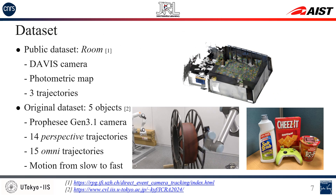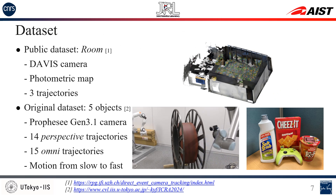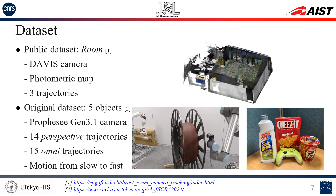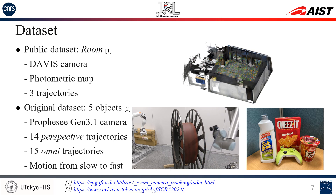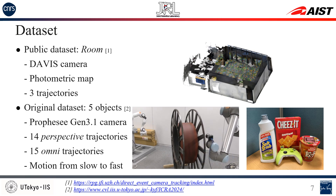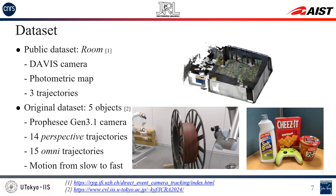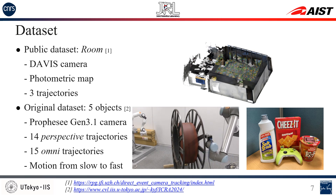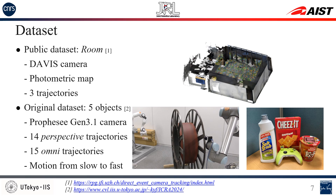We evaluate our method on two datasets. First is the room dataset, with three trajectories of a moving camera inside a room. Second is our new dataset, consisting of 29 trajectories of 5 different objects. We include both pinhole lens and fisheye lens configurations, and also use the Prophesee 3.1 camera.